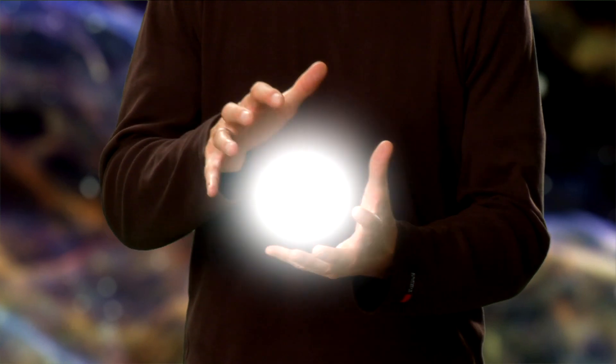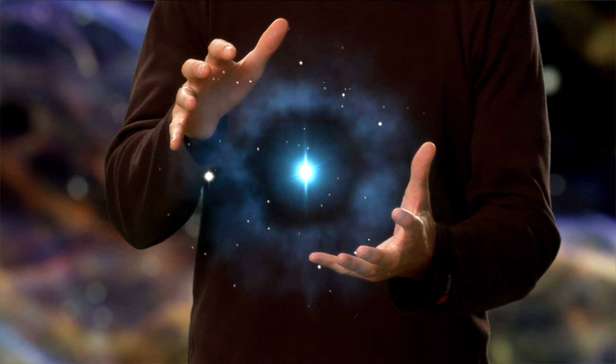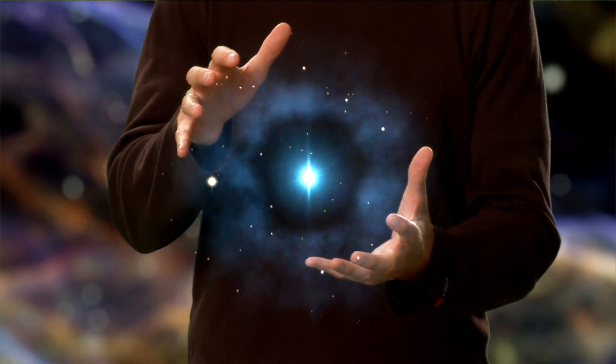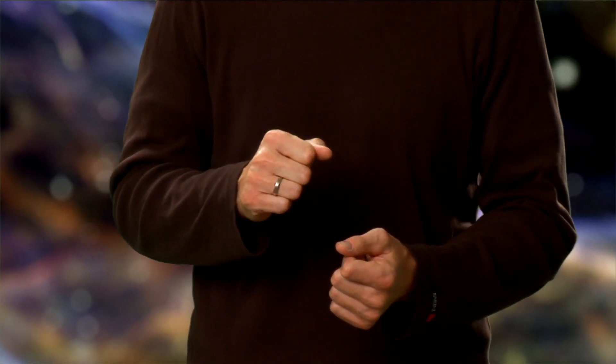The expanding shells of the supernova remnants eventually mixed with other material in the Milky Way and this became the raw material for the next generation of stars and planets, including our own solar system. So the chemical elements that constitute the planets, the Earth, the plants and animals around us, and indeed our very cells were built deep inside ancient stars and in supernova explosions. So the green in the grass and the red of our blood are in fact the colors of stardust.